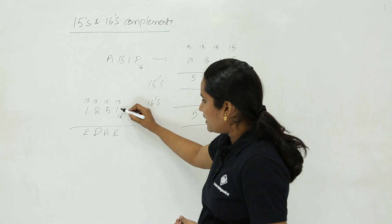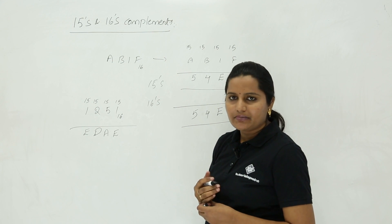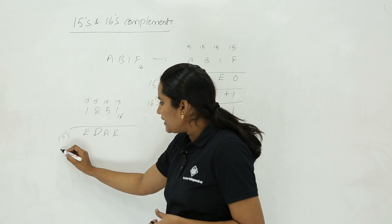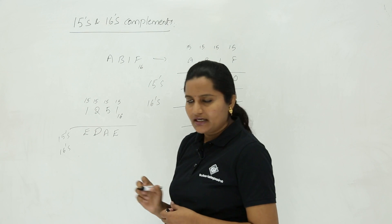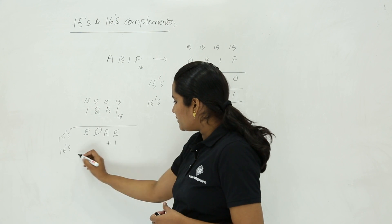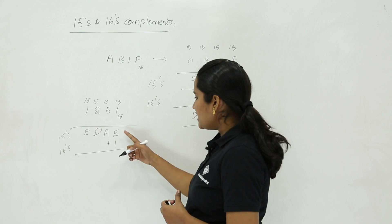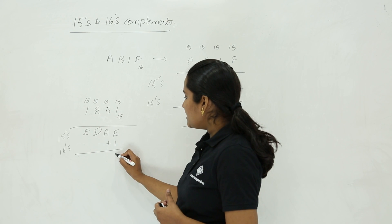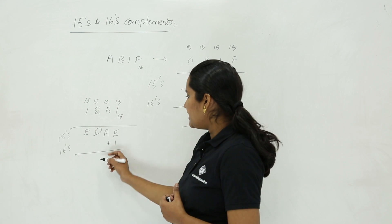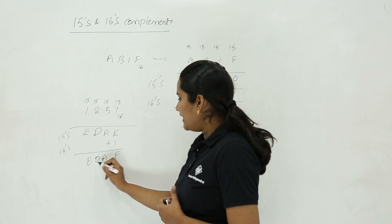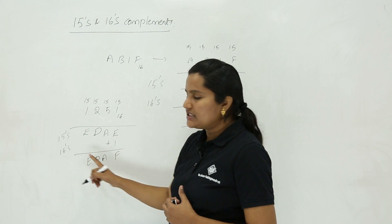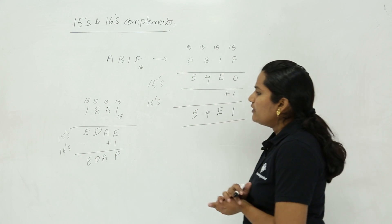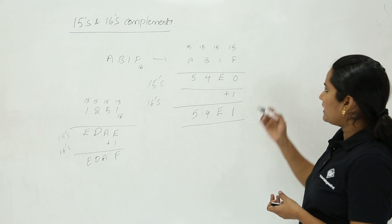So that means if you take 1, 2, 5, 1 as your hexadecimal number, the 15's complement is E, D, A, E. To find the 16's complement, just add 1 to this. So E plus 1 gives F, and the remaining digits stay as A, D, E. So E, D, A, F is the 16's complement of the hexadecimal number 1251.